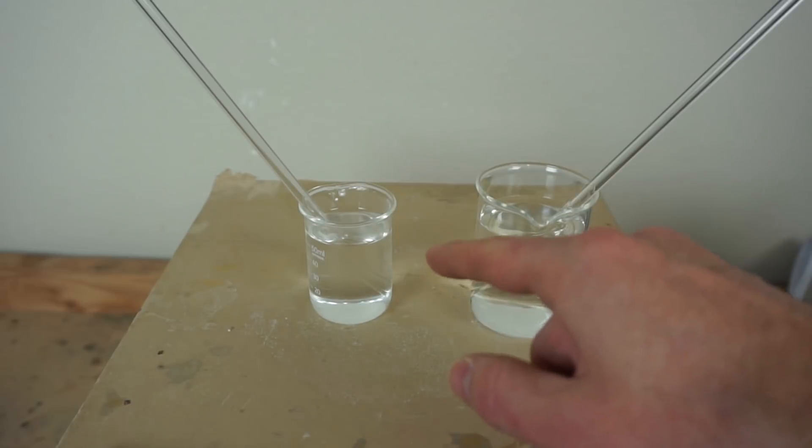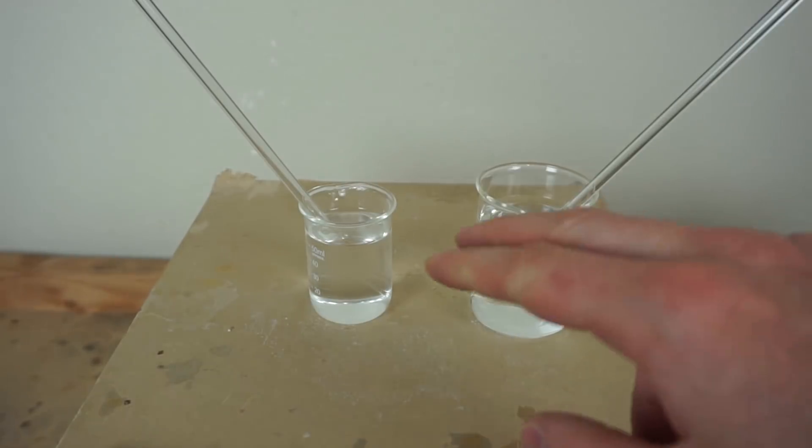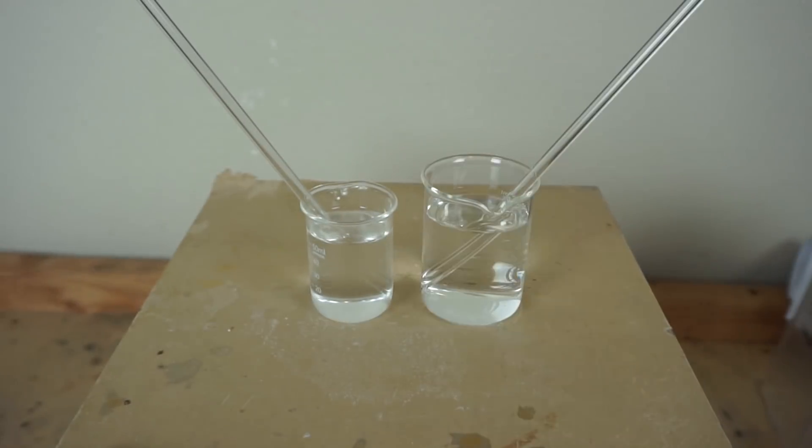So this liquid is glycerin, and its refractive index is very close to the glass, and so you can barely see it at all. So again, this answers the question: the reason you can see two translucent things is just because their refractive indices are different. But if they're the same, then you can't see it at all.